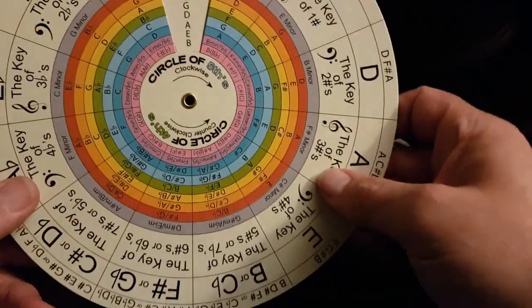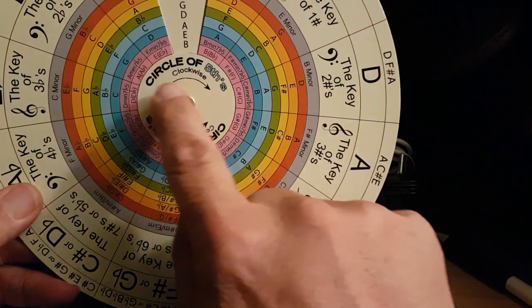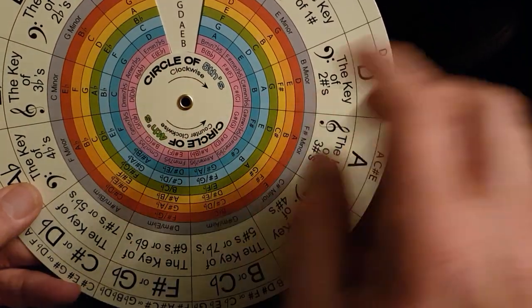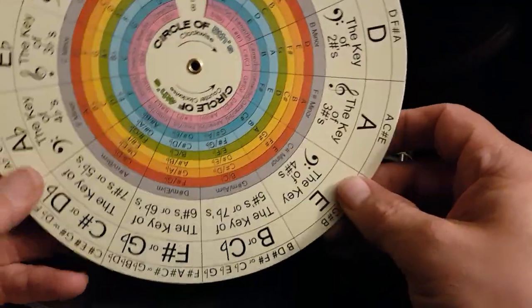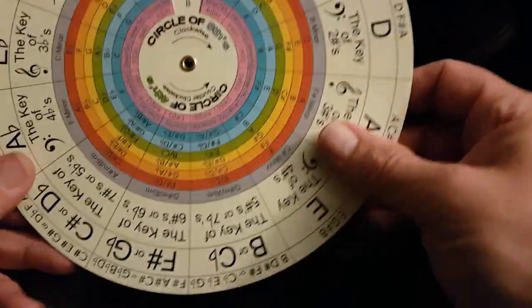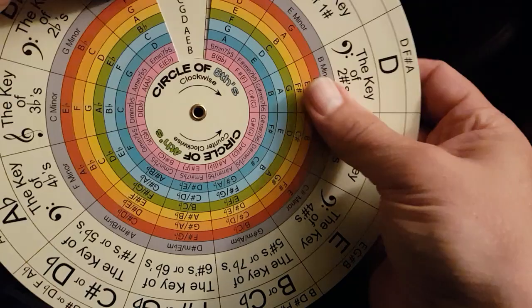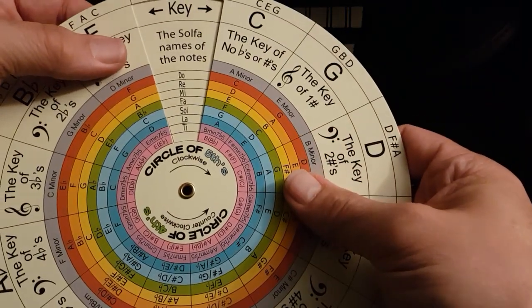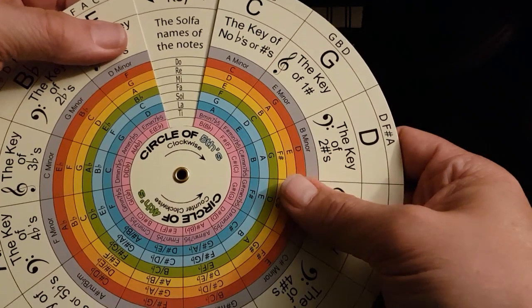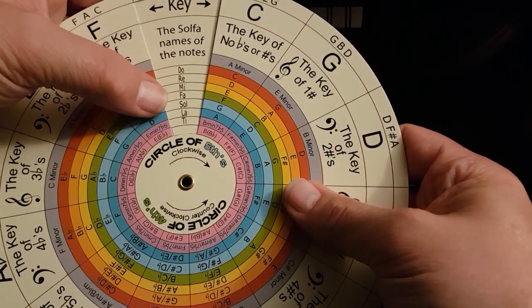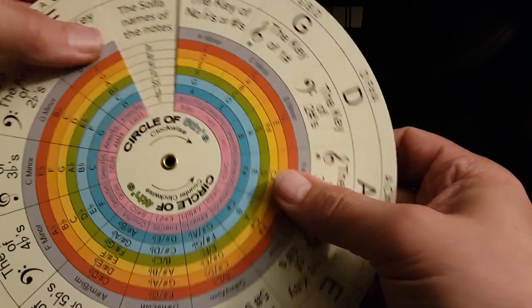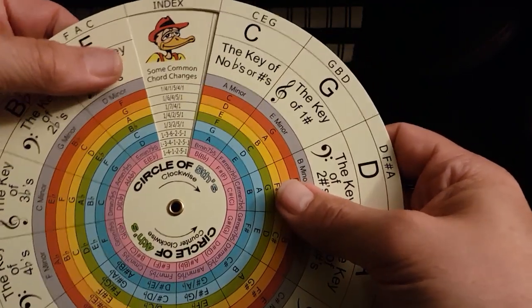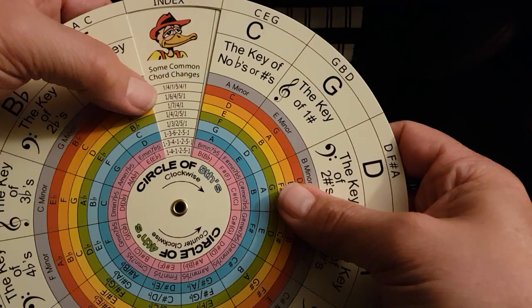So here in the middle it's talking about the circle of fifths clockwise and the circle of fourths anticlockwise. And now you can see here in the middle this will turn, there you go, that's the solfege names of notes: Do Re Mi Fa Sol La Ti Do if you go back to the Do of course. And then some common chord changes there, very useful to have.